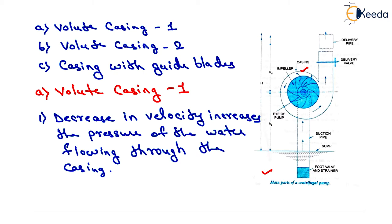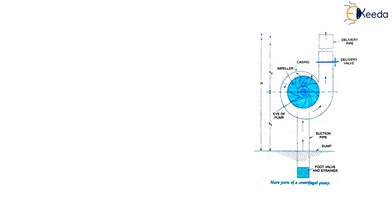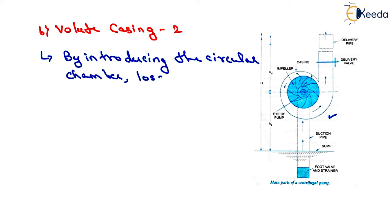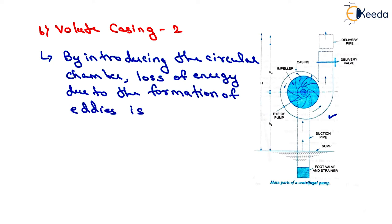Now we will see volute casing type 2. If a circular chamber is introduced between the casing and the impeller, the casing is known as vortex casing type 2. By introducing the circular chamber, the loss of energy due to formation of eddies is reduced considerably. Thus the efficiency of the pump is more than when only volute casing type 1 is provided.